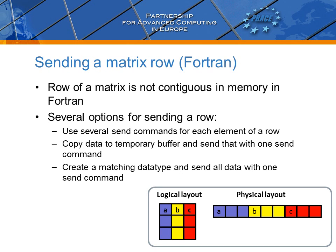Consider, however, a case where you would like to send only one row of a matrix when writing a Fortran program, which is not contiguous in memory. We note that this is a completely analogous case to sending a column when programming in C. We could set up a series of send operations sending one element at a time, or we could copy the row into a vector and send that vector instead. The third and best solution is to generate a new data type that corresponds to a row in a matrix and send that data as if it were a contiguous block.